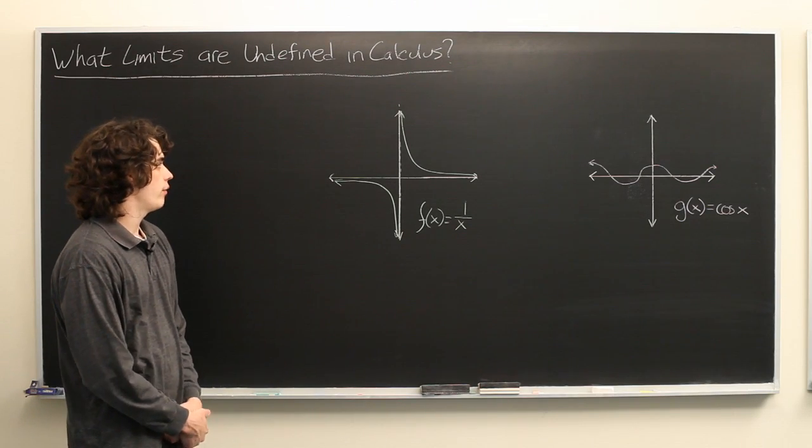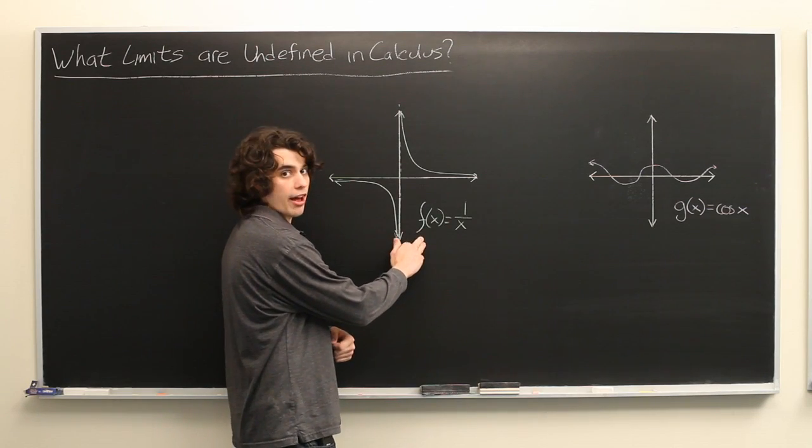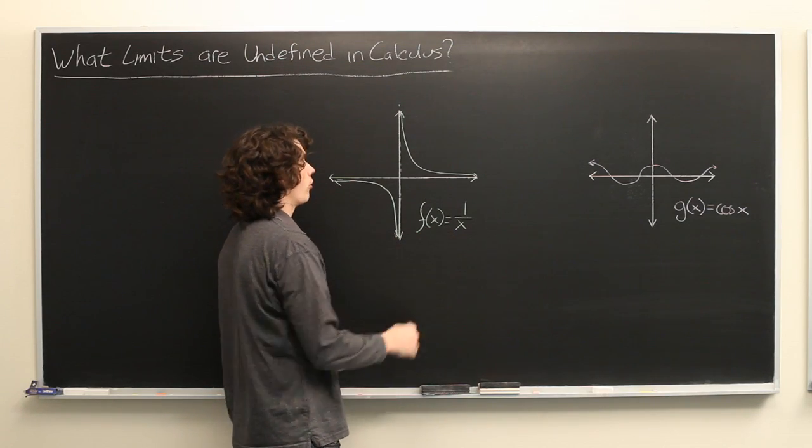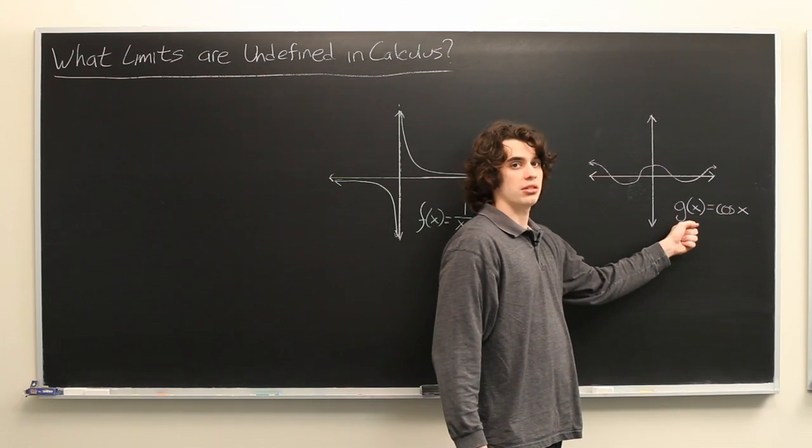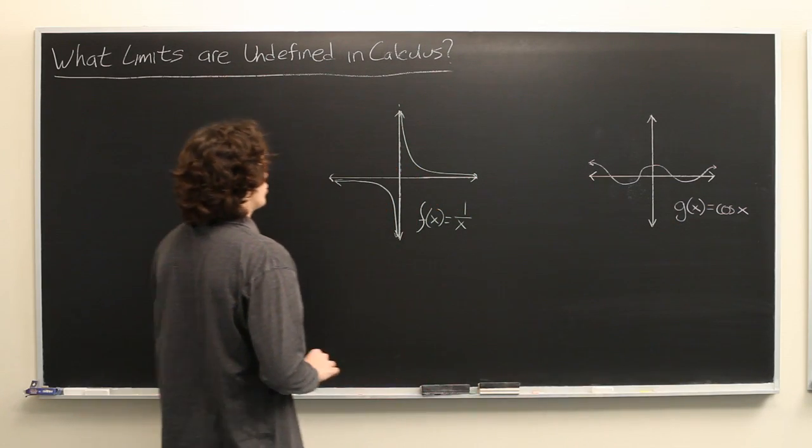So here we have two example functions. In the green we have f is equal to 1 over x and in the purple we have g is equal to the cosine of x, one of the trigonometric functions.